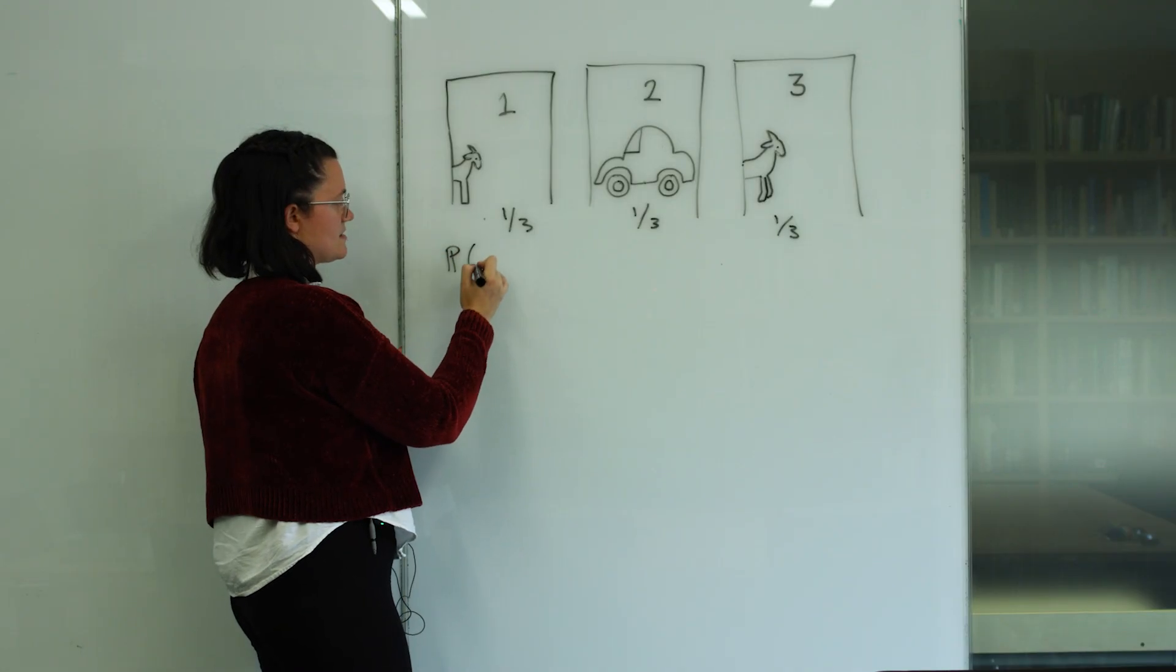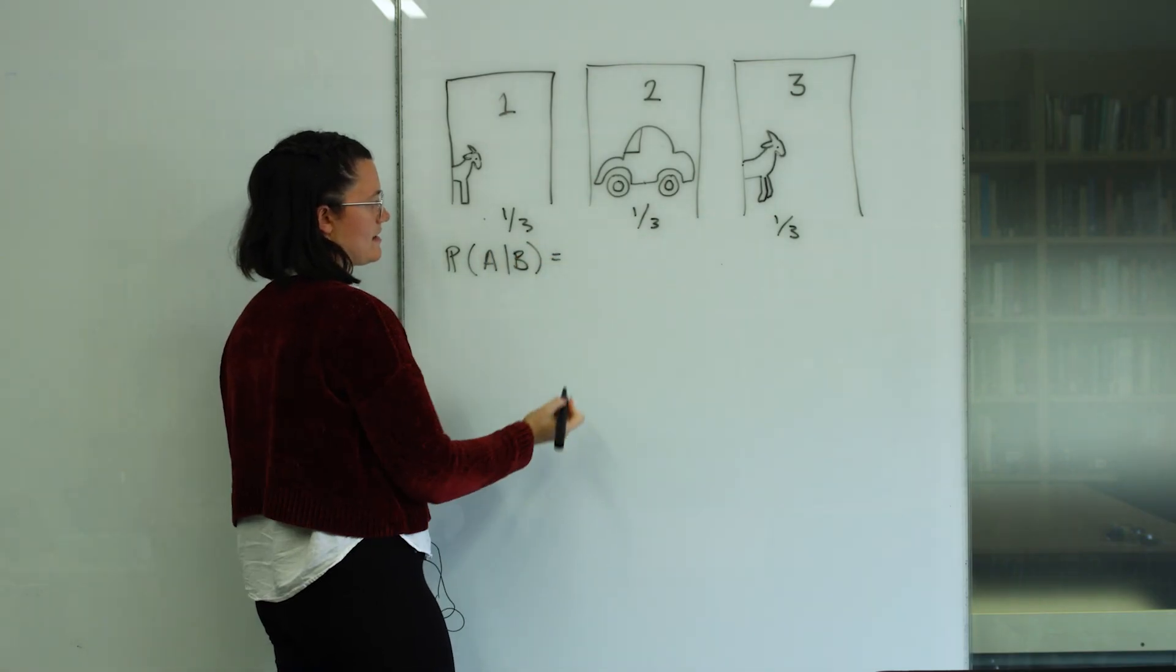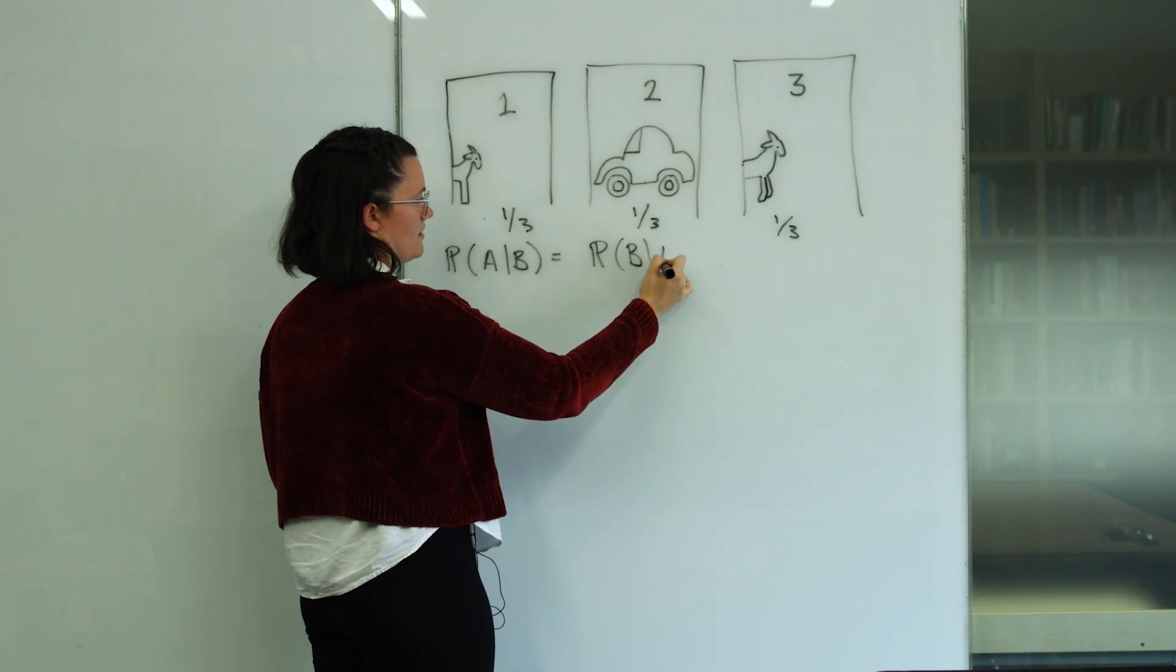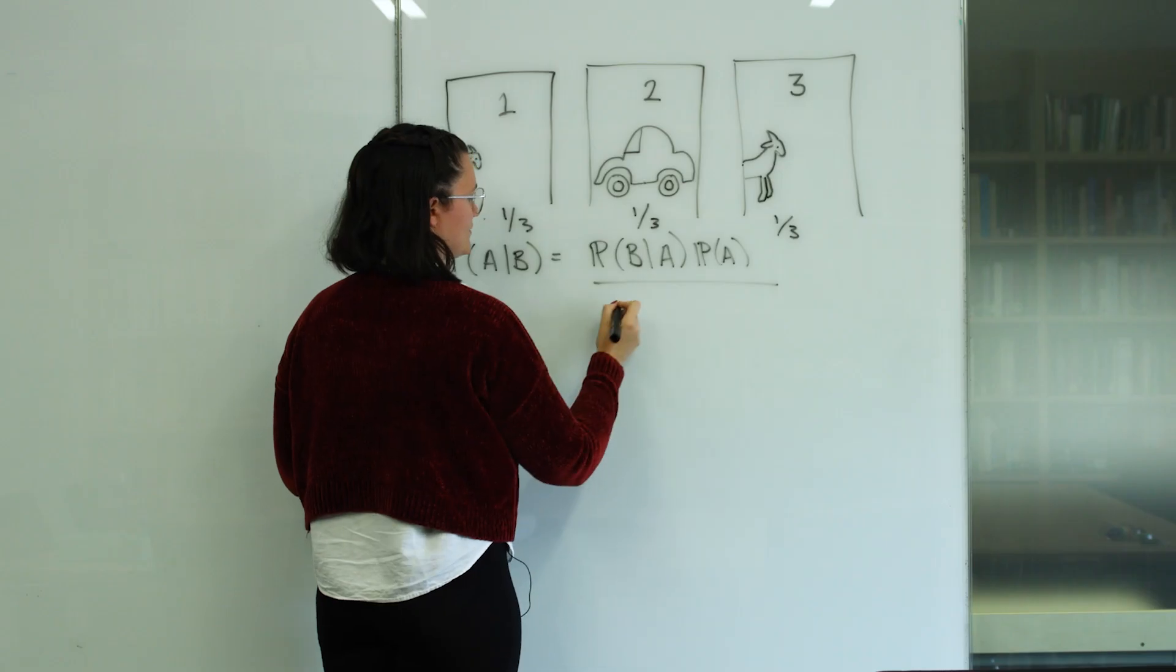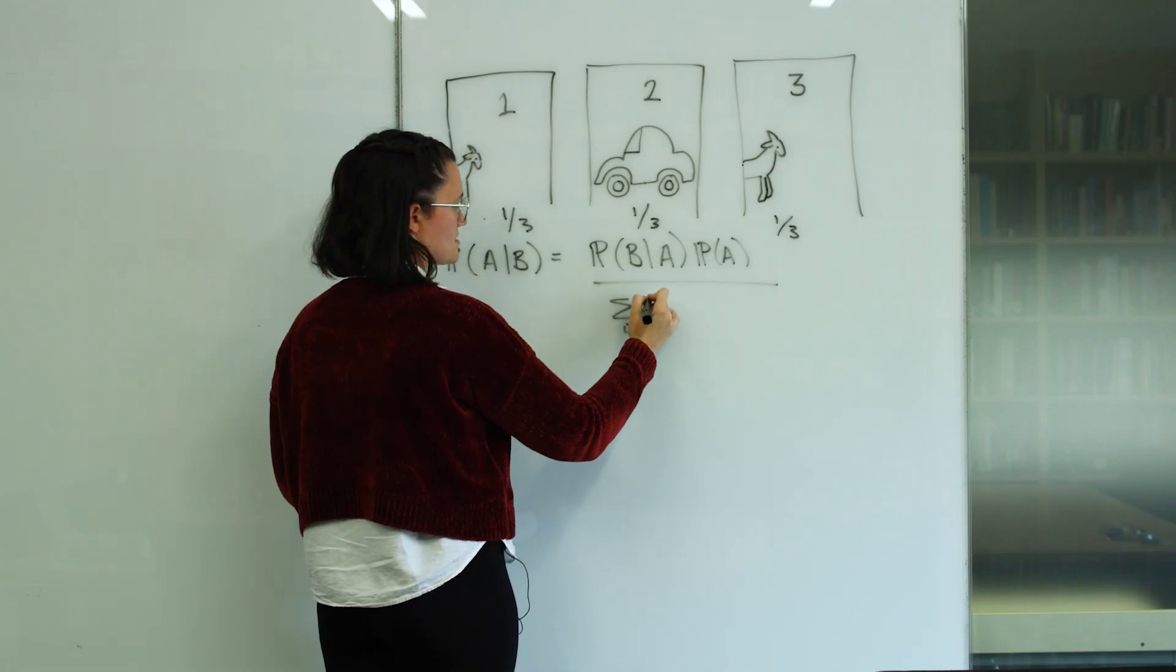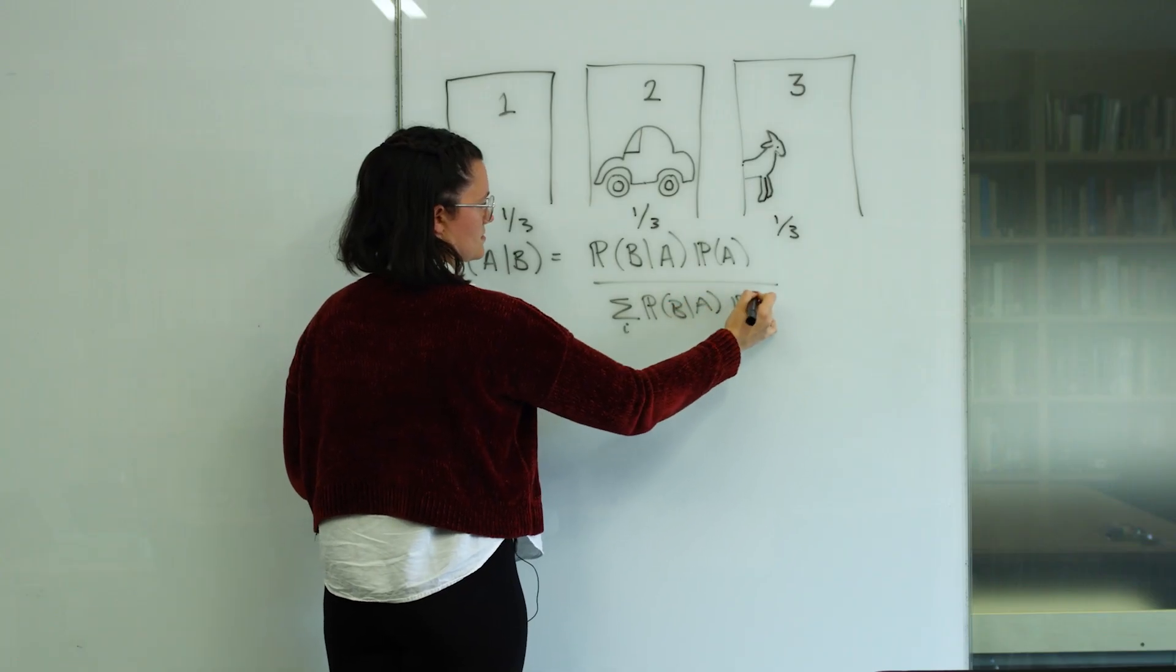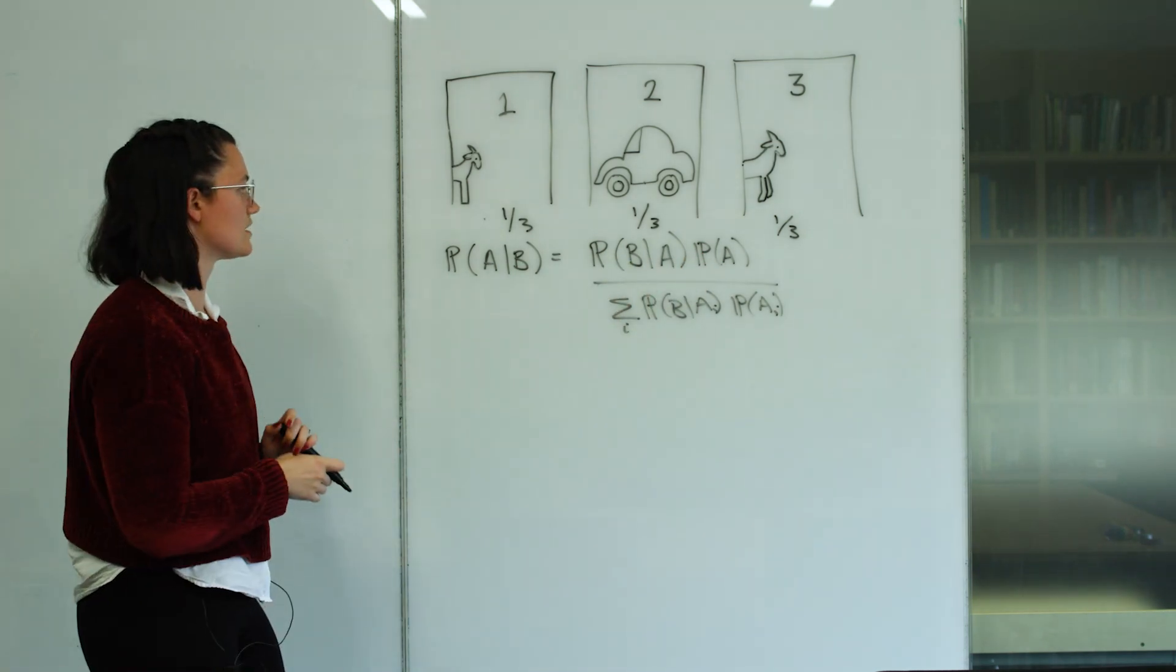It says the probability of an event A happening given some event B can be written as the probability of event B happening given A times the probability of A happening over the sum of all of these, let's call them subset probabilities A_i, probability B given A_i times the probability of A_i. Sorry, these are A_i's. So that includes this A above, but there's some other ones as well.